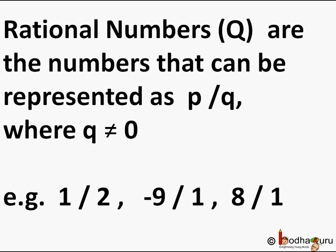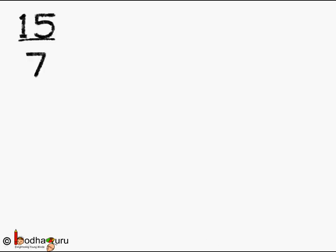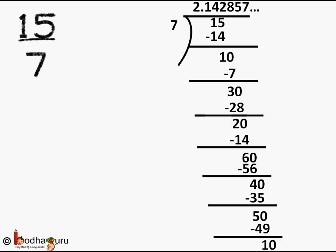For example, 1 by 2 is a rational number where P is equal to 1 and Q is equal to 2. Now let us take 15 by 7. Can we do that? We have learnt decimal division in earlier classes.